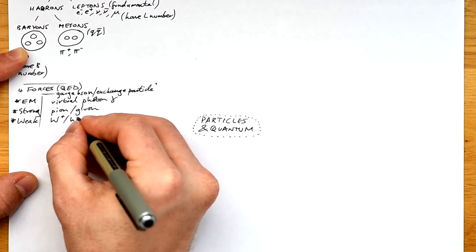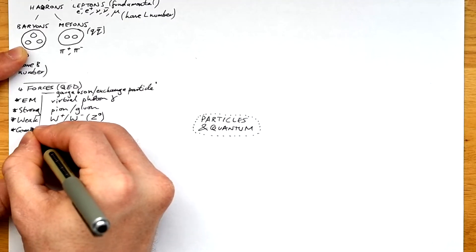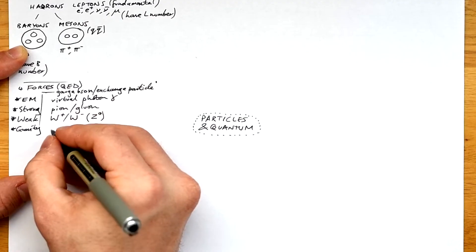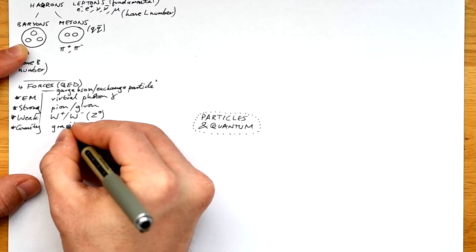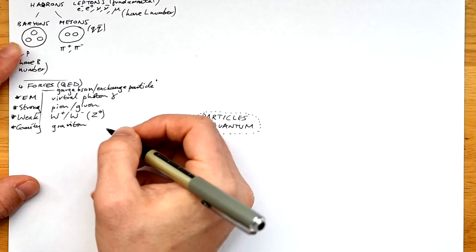Weak is W plus or W minus, we don't really deal with the Z zero. And the cousin that we all ignore is gravity, because we don't really understand it as well. And even though we haven't found it, we call the exchange particle the graviton.